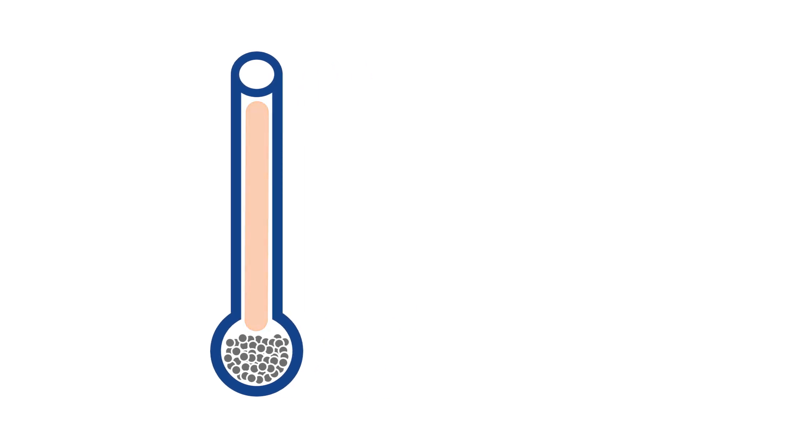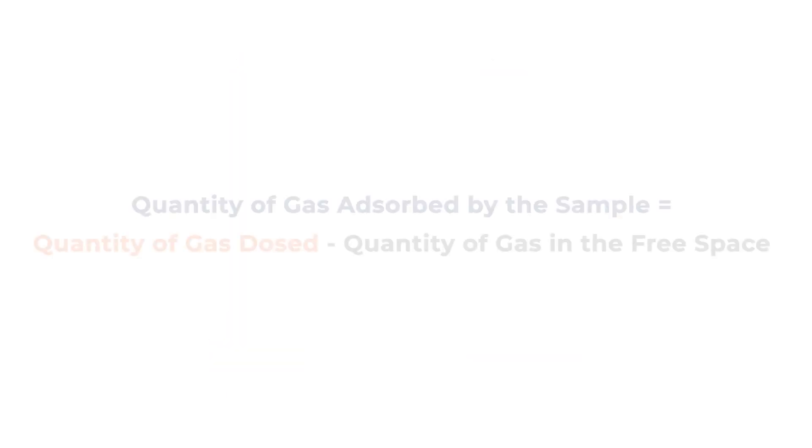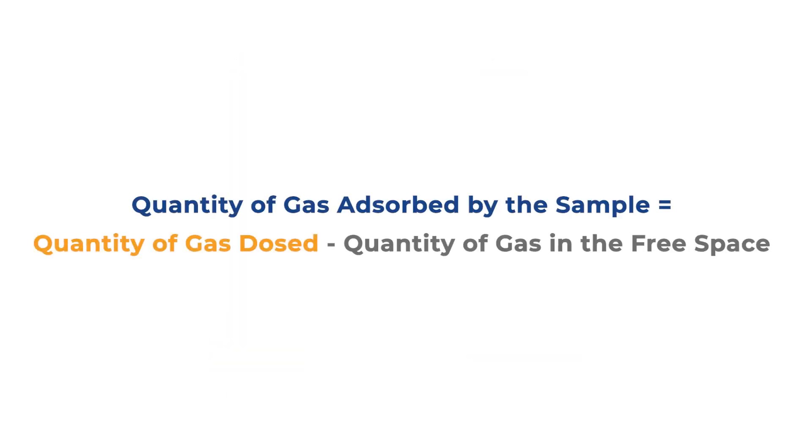It is important to know this value so when a known volume of gas is dosed, the volume of gas occupying the void space above the sample can be subtracted to accurately calculate the quantity absorbed by the sample.